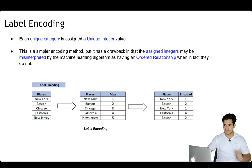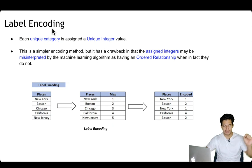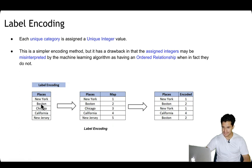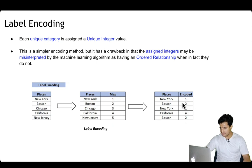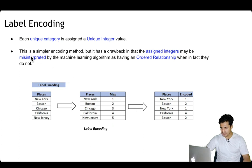The first technique is label encoding. Label encoding is mostly done for nominal categorical variables where there is no intrinsic ordering. Each unique category is assigned a unique integer. For example, places like New York, Boston, Chicago, California, and New Jersey will each be given a number. Wherever New York appears you have 1, wherever California appears you have 4, and so on.